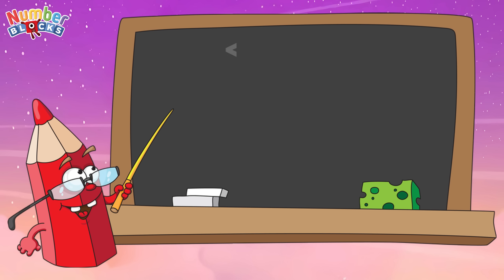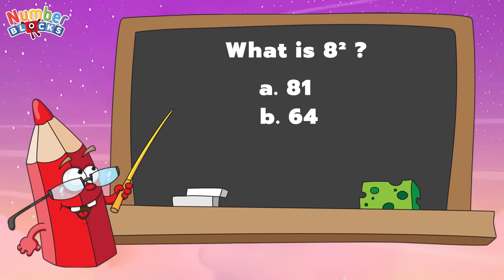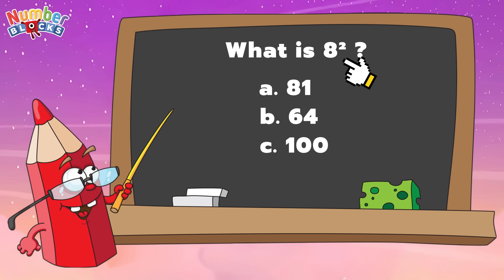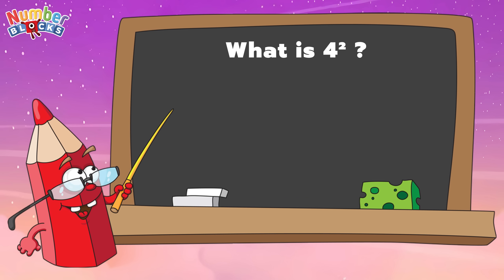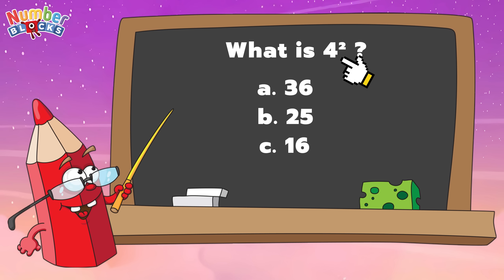Can you answer, what is 8 squared? Is it letter A, 81, B, 64, or letter C, 100? And the correct answer is letter B, 64. 8 squared is equals to 64. Next, what is 4 squared? Is it letter A, 36, B, 25, or letter C, 16? And the answer is letter C, 16. 4 squared is equals to 16.